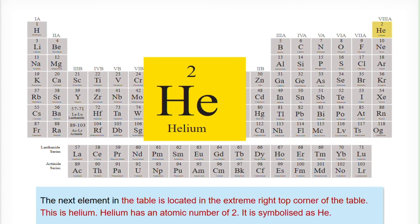The next element in the table is located in the extreme right top corner of the table. This is helium. Helium has an atomic number of 2 and is symbolized as HE.